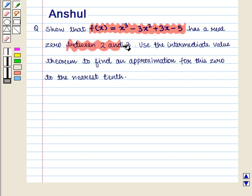2 and 3. Finally, use the intermediate value theorem to find an approximation for this zero to the nearest tenth.